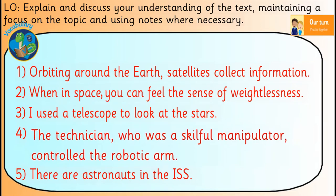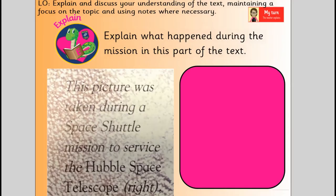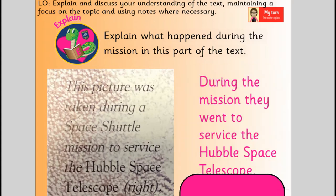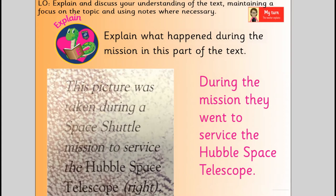We're now going to have a look at some explain questions. This is my turn — I'm going to have a look at this question myself, then we'll go through our turn. The question is: explain what happened during the mission in this part of the text. Reading the text again: 'This picture was taken during a space shuttle mission to service the Hubble Space Telescope.' So my answer is: during the mission, they went to service the Hubble Space Telescope. I've taken it straight from the text and that explains what they did during the mission.